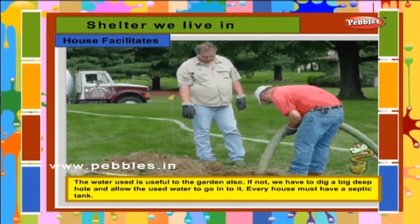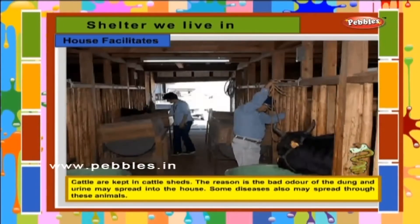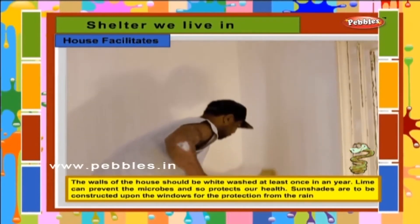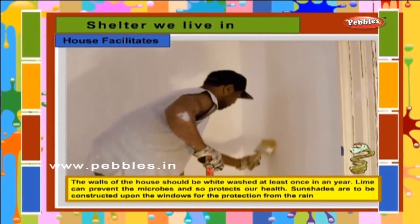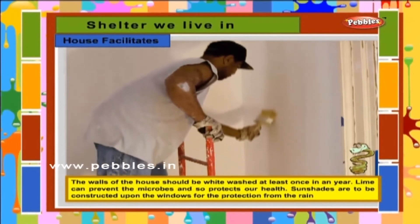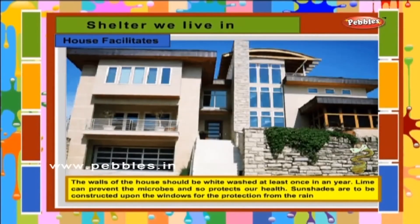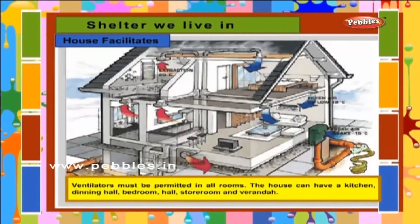Every house must have a septic tank. Cattle are kept in cattle sheds, as the bad odour of dung and urine may spread into the house, and some diseases may also spread through these animals. The walls of the house should be whitewashed at least once a year. Lime can prevent microbes and so protect our health. Sun shades are to be constructed upon the windows for protection from rain.